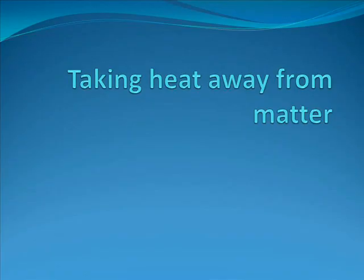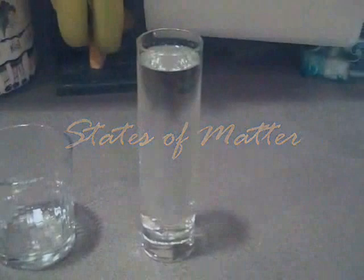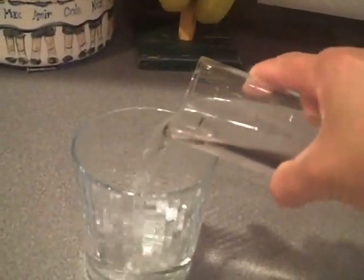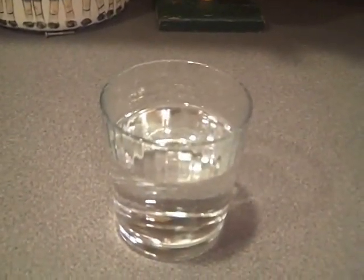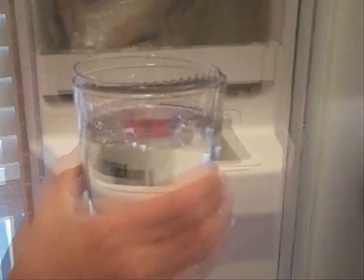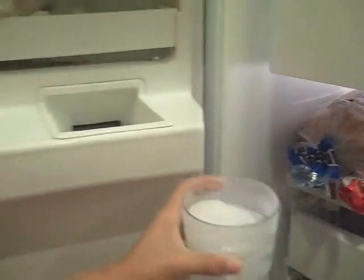Now let's see what happens when heat is taken away from matter. We start with a glass of water, which is a liquid. Notice that as we pour the liquid into the other glass, the liquid assumes the shape of the new container. This is because molecules in a liquid can slide over and around each other. Now we're going to place this liquid into the freezer. In the freezer, the heat will leave the liquid, causing the molecules to slow down. The water has clearly turned from a liquid to a solid.